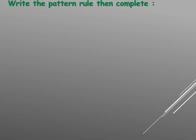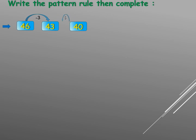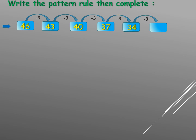Write the pattern rule then complete: forty-six, forty-three — the number becomes smaller, that means minus, and the difference is three. Our rule is minus three. Forty-three minus three equals forty, forty minus three equals thirty-seven, thirty-seven minus three equals thirty-four, thirty-four minus three equals thirty-one.